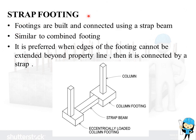Next is Strap Footing. In Strap Footing, footings under each column are built individually and connected by a strap beam. It is very similar to Combined Footing, and the reasons for choosing it are also similar. This individual column and this individual column are placed on individual footings connected by a beam known as a strap beam. It is preferred when the edges of the footing cannot be extended beyond the property line.